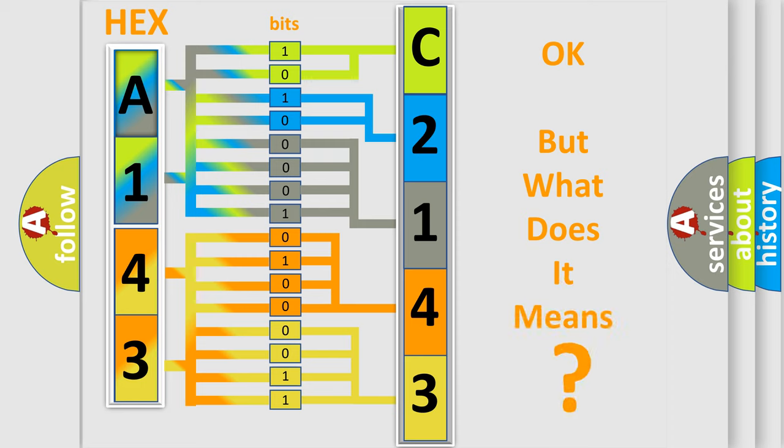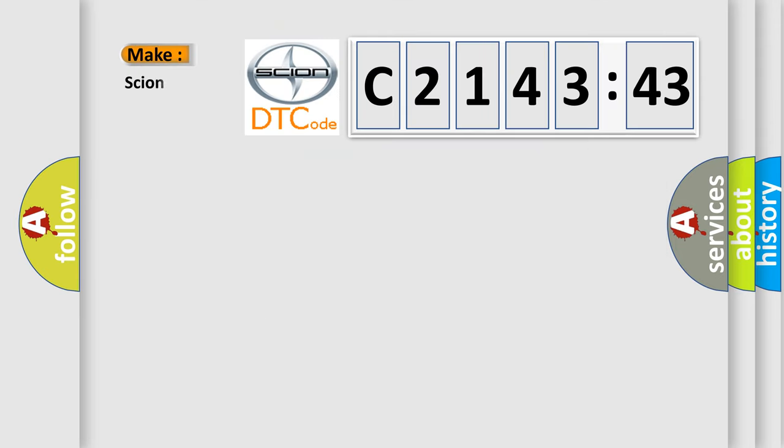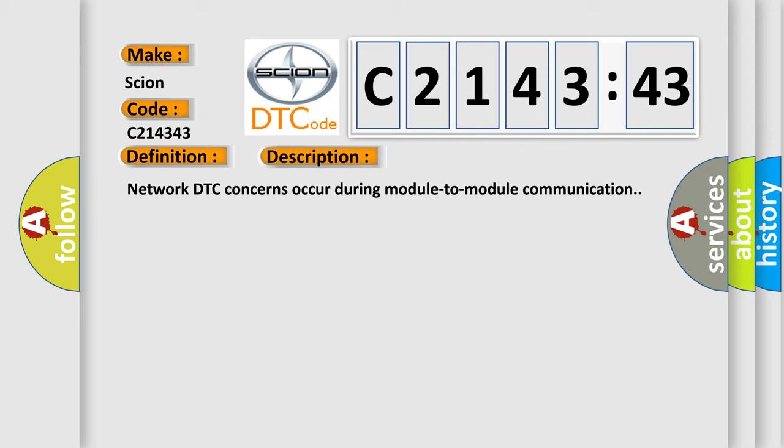The number itself does not make sense to us if we cannot assign information about what it actually expresses. So, what does the Diagnostic Trouble Code C214343 interpret specifically for Scion car manufacturers? The basic definition is invalid data received from IPC. And now this is a short description of this DTC code.